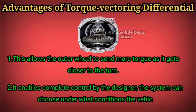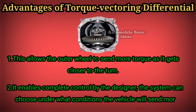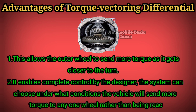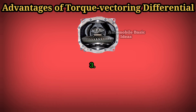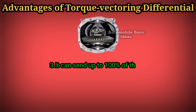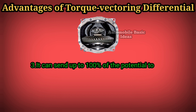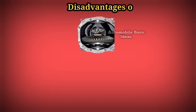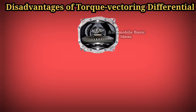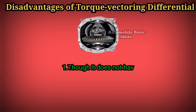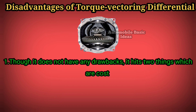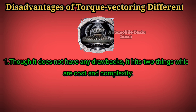The system can choose under what conditions the vehicle will send more torque to any one wheel, rather than being reactive. Three, it can send up to 100% of the potential torque to a single wheel. Disadvantages: though it does not have many drawbacks, it is impacted by two things — cost and complexity.